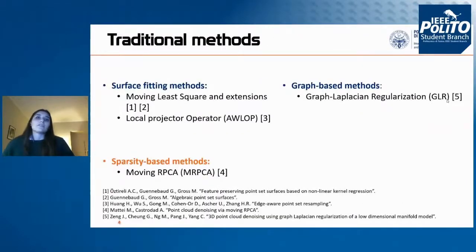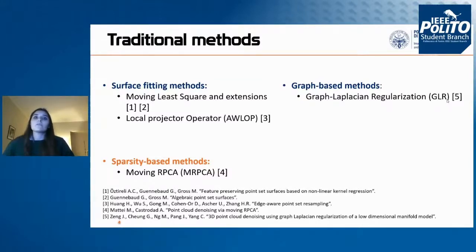In the literature, there are several methods that address point cloud denoising. Traditional methods such as surface fitting or sparsity-based techniques are focused on optimizing local models to fit the surface to the noisy data or to exploit geometrical features such as surface normals. These methods obtain good results when the amount of noise is limited, but when the noise level increases, they obtain poor denoising performance because the input data is too noisy for a good surface estimation.